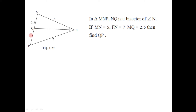In this problem we have to find the length of segment QP. Since an angle bisector is given, we use the angle bisector property: if there is a triangle and an angle bisector of one of its angles, then that angle bisector divides the side opposite to that angle in the proportion of the remaining two sides. The angle bisector of angle N is given, so the side opposite to angle N is MP, and this bisector divides that side in proportion to the remaining two sides.